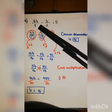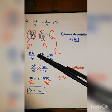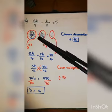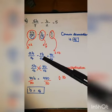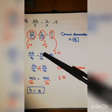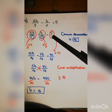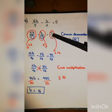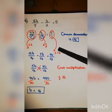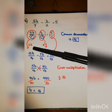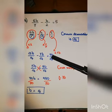Multiplying the first fraction by two gives twelve b over fourteen. To fix the second fraction, multiply by seven: two times seven equals fourteen, and b times seven equals seven b. The right side, five, equals five over one; multiplying by fourteen gives seventy over fourteen. The new equation is twelve b over fourteen minus seven b over fourteen equals seventy over fourteen.